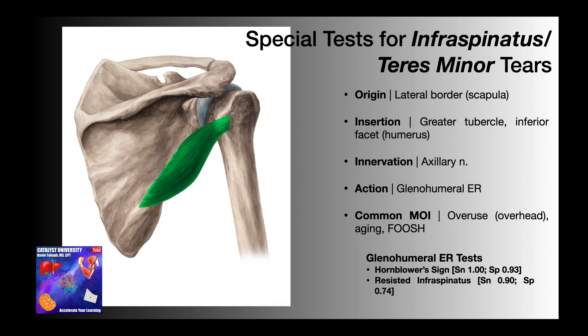The two special tests that we're going to talk about now are the hornblower sign and the resisted infraspinatus test. Understand that both of these tests will be positive when there's an infraspinatus tear or a teres minor tear. However, in the grand scheme of things, it doesn't matter which muscle is torn — it's not going to affect the plan of care for the patient. The rehab is going to look pretty much exactly the same regardless of which muscle is torn.